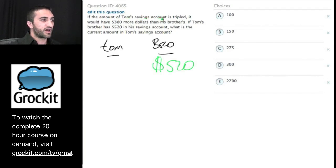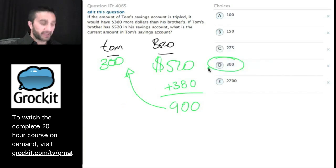Tom's brother has $520. If the amount in Tom's savings account is tripled, it would have $380 more than his brother. So he has more than his brother. He would have $380 more if his was tripled. So that should give us $900. And they tell us that this would be three times what Tom had. So Tom should have $300.